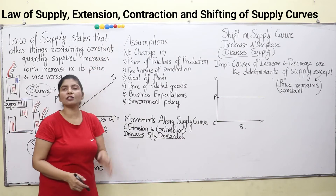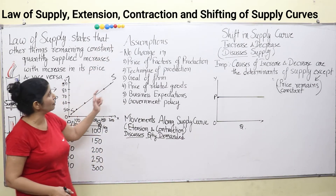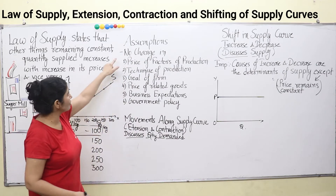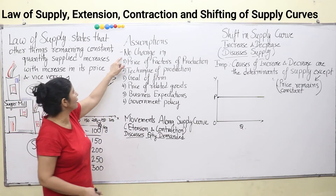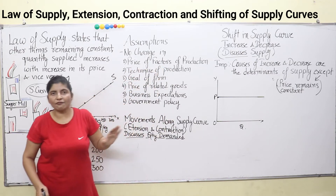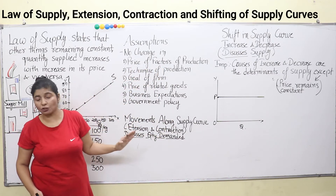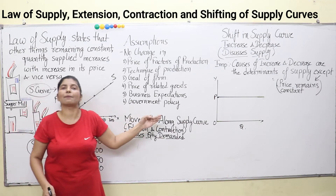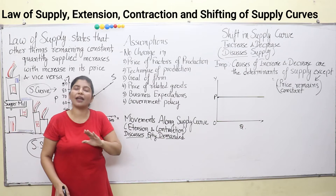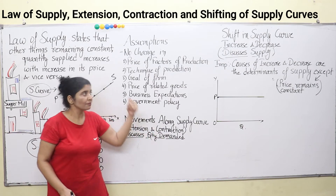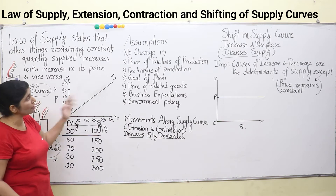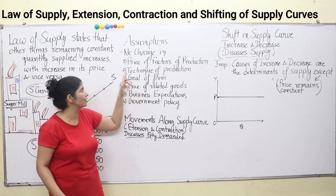Now, the assumptions of the law of supply — they are very simple. Number one: no change in the price of factors of production. Do you understand factors of production? They are land, labor, capital, entrepreneur, etc. The price of all these factors remains unchanged. When this law of supply is operating, it will operate only when these things remain constant.